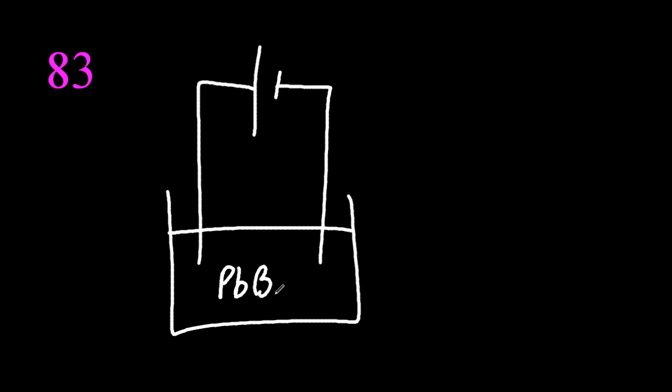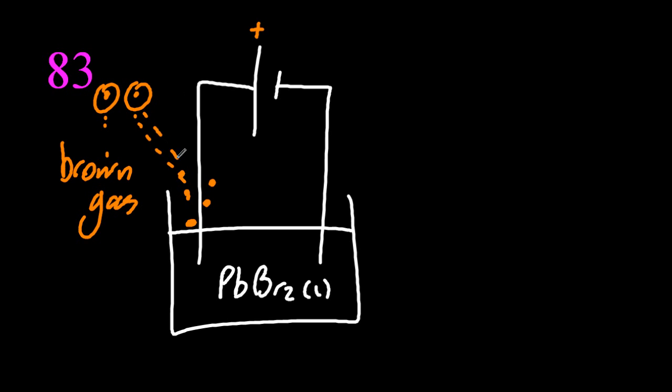Here's electrolysis, lead bromide. What do I see at the positive electrode? You don't see bromine. You see a brown gas, bubbles of brown gas. Don't say you see bromine. You don't get a point.